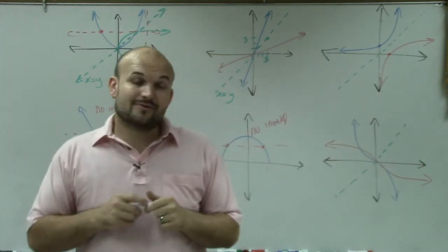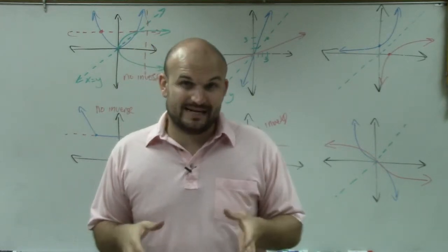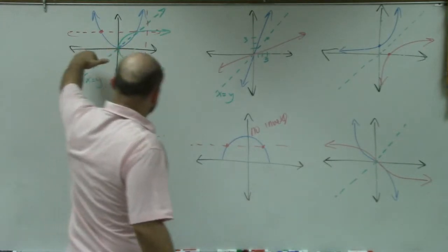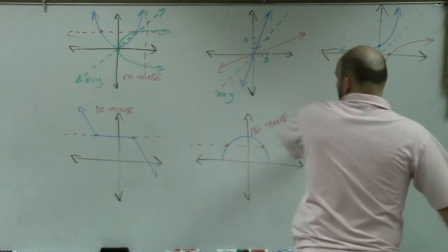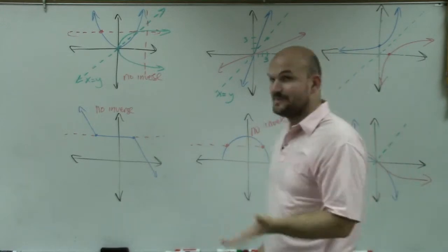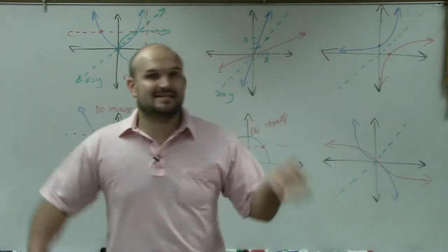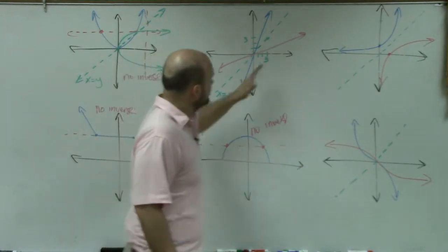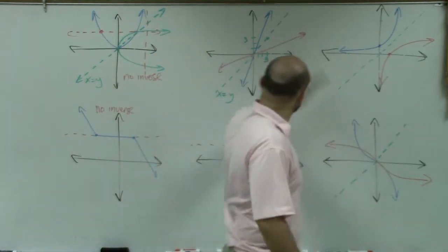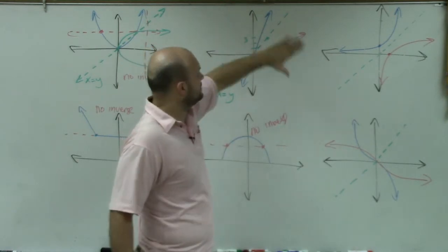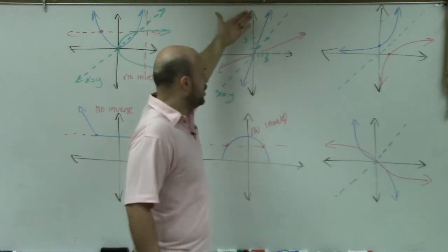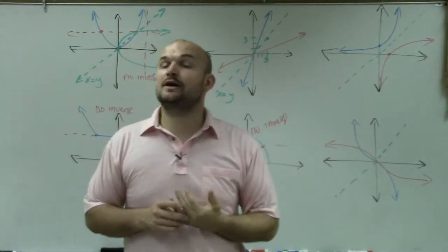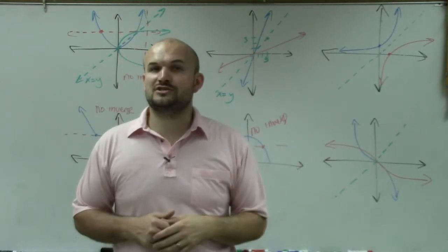Just to recap: when identifying if a function has an inverse graphically, first check that it passes the vertical line test. If it doesn't, it does not have an inverse. If it does pass the vertical line test, then draw the y equals x line and reflect everything over — above the line goes below, below the line goes above. That is how you draw and determine if a function has an inverse. Thanks.